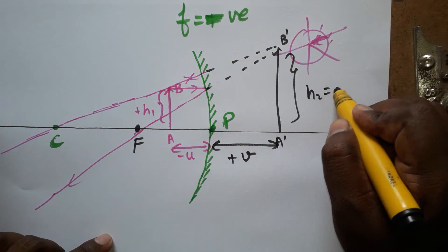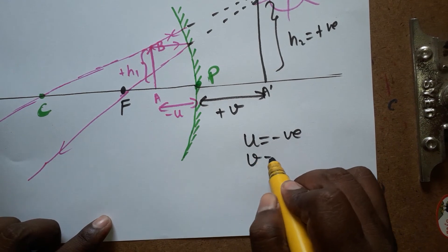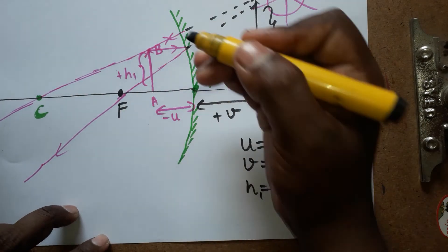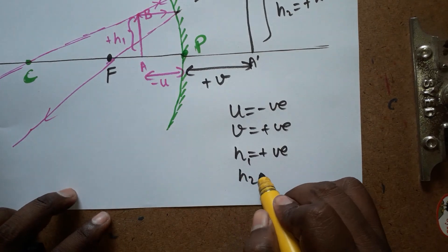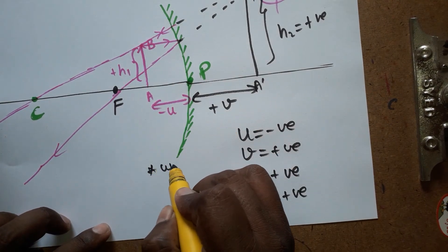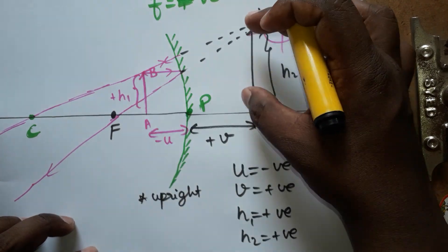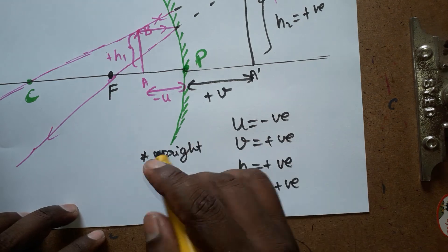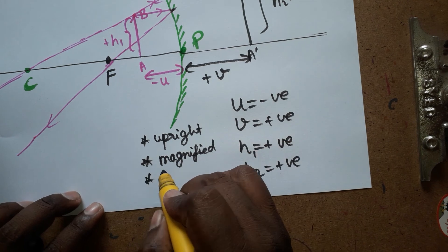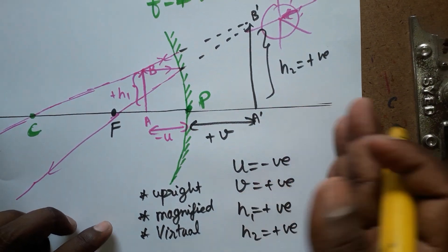To summarize: u is negative (left side of mirror), v is positive (right side of mirror), h1 is positive (object above principal axis), and h2 is also positive (image above principal axis). The image is upright and the image size is bigger than the object size — it is magnified. Since the image is upright and formed behind the mirror, it is a virtual image.